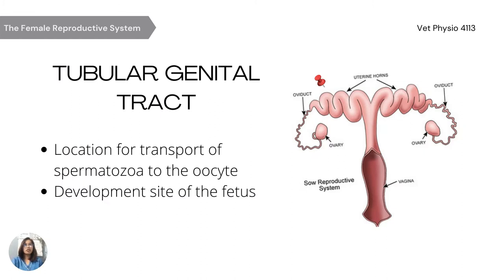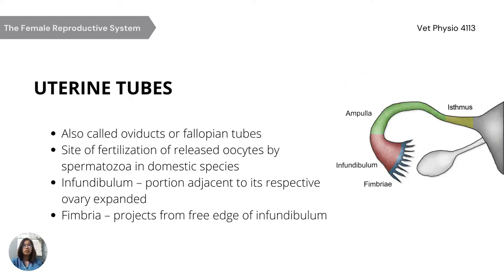The tubular genital tract is a structure of the female reproductive system which is a location for transport of spermatozoa to the oocyte, and is also a development site of the fetus. It includes uterine tubes, also called oviducts or fallopian tubes, which are paired and convoluted tubes. It is a site of fertilization of released oocytes by spermatozoa in domestic species. The infundibulum is the portion adjacent to its respective ovary, expanded, with a fimbria projecting from the free edge of the infundibulum. It assists in directing the oocyte into the infundibulum at the time of ovulation. This structure is lined with secretory cells, ciliated cells, and longitudinal and circular smooth muscles that assist transport.